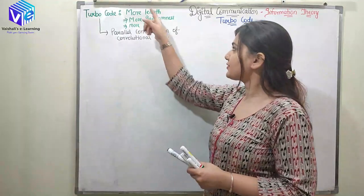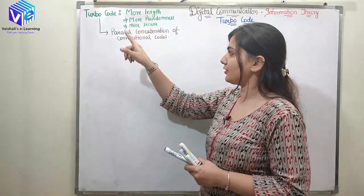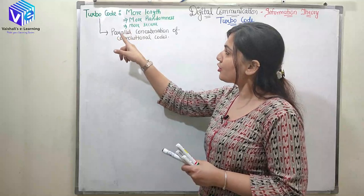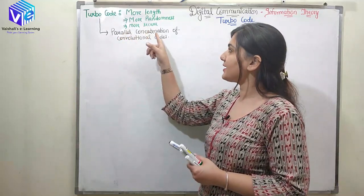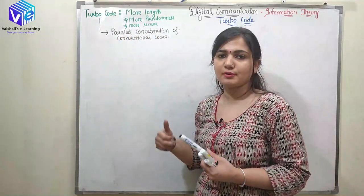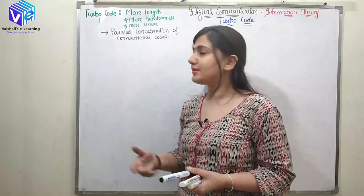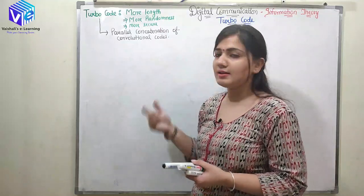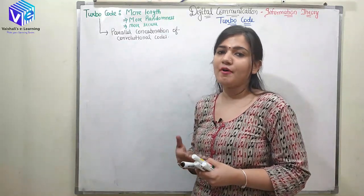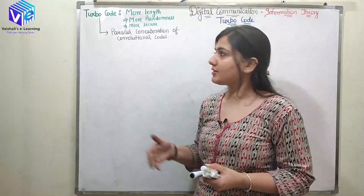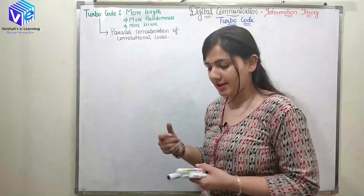It is of more length, more randomness, more secure, and it is also a parallel concatenation of convolutional code. Now you must be wondering what is parallel concatenation. There are three types of concatenation: series, parallel, and hybrid.